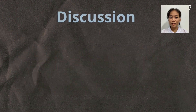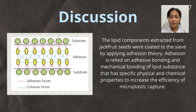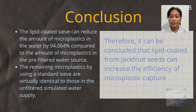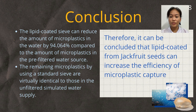The lipid components extracted from jackfruit seeds were coated onto the sieve by applying adhesion theory. Adhesive bonding and mechanical bonding of the lipid substance can increase the efficiency of microplastic capture. Because this project is a simple idea that can be developed for future use, it is a concept that uses a hydrophobic substance adaptable in real life. Using a thicker coating can also make it more effective in adhesion and more durable. Therefore, it can be concluded that the lipid-coated sieve from jackfruit seeds can increase the efficiency of microplastic capture.